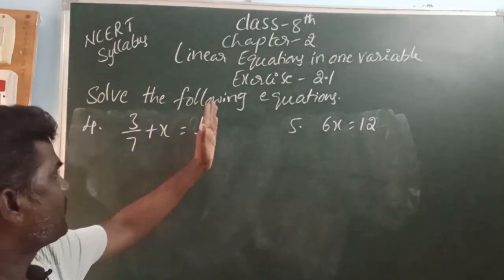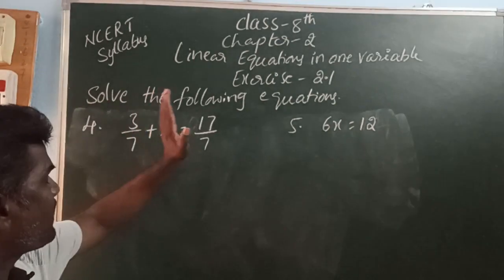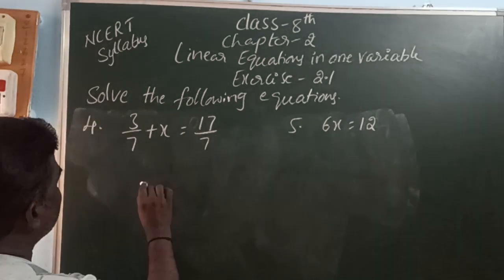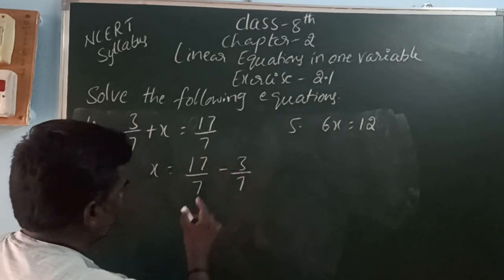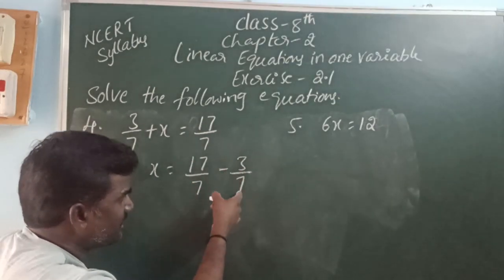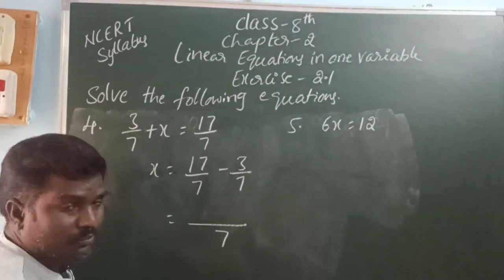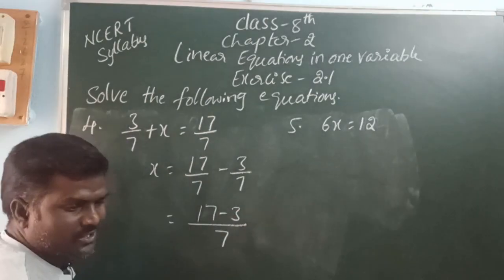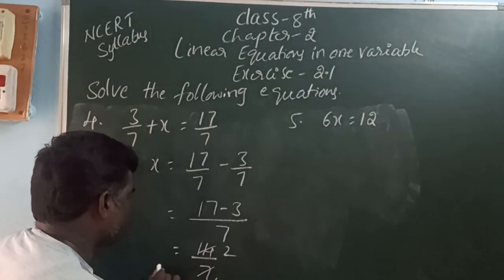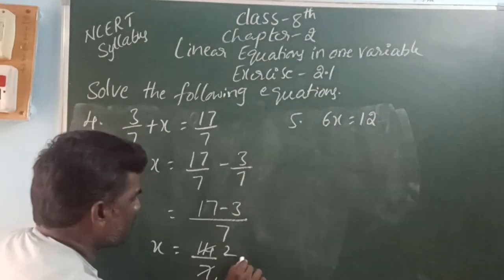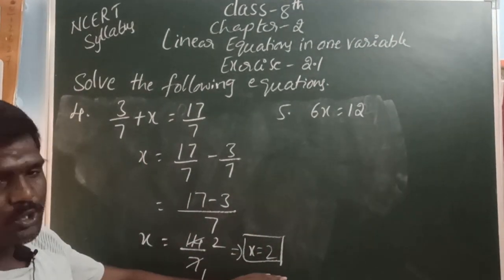3 by 7 plus x is equal to 17 by 7. The unknown thing is x. So x plus 3 by 7 is going to the right side and it becomes minus. That is, x is equal to 17 by 7 minus 3 by 7. The denominator of both numbers is 7. So write the common denominator and subtract the numerators: 17 minus 3 is 14. So 14 by 7 — simplifying, 14 divided by 7 is 2. The value of x is 2.